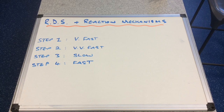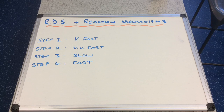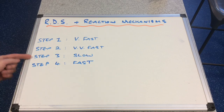I've made up four steps here — just a made-up sequence of steps for a reaction. Suppose the first step was very fast, the second step was very very fast, the third step was slow, and the fourth step was fast. One of those steps would be classed as the rate determining step — effectively the step that governs the overall rate of the reaction. It's the slowest step.